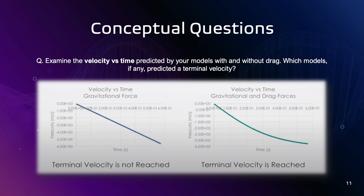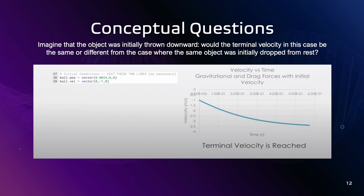Our second question states: imagine if the object was initially thrown downward, would the terminal velocity in this case be the same or different from the case where the same object was initially dropped from rest? We can see that, indeed, according to the code, the terminal velocity in this case would definitely be different from where the same object was initially dropped from rest. Thank you for watching!